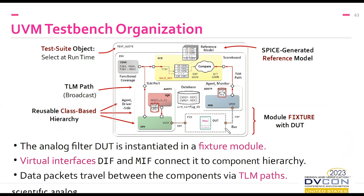The top-level module instantiates the fixture submodule, the driver-side interface bus DIF, and the monitor-side bus MIF. That raises an immediate question: classes are abstract entities with no hardware ports. How do we connect a component like the driver object to the interface bus? We use an artifice — we declare a virtual counterpart called VDIF, just a class variable. We then make an association between the virtual and the physical bus name inside UVM's built-in decentralized config DB. We do the same for the monitor, and we'll cover this in detail in a few slides.